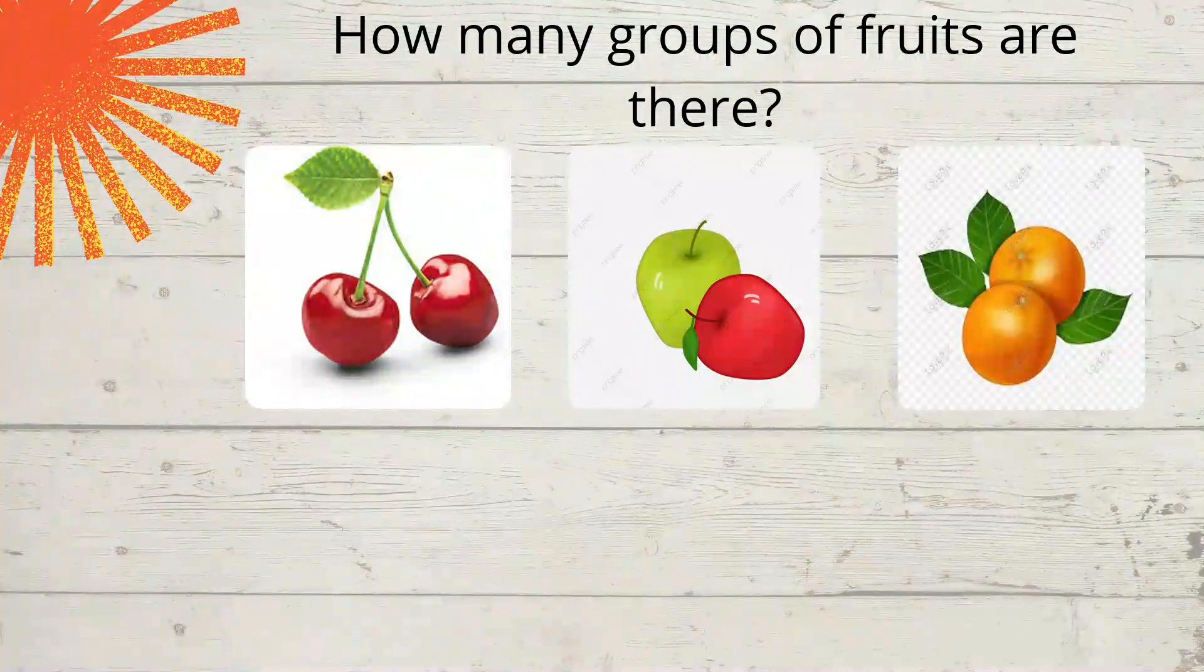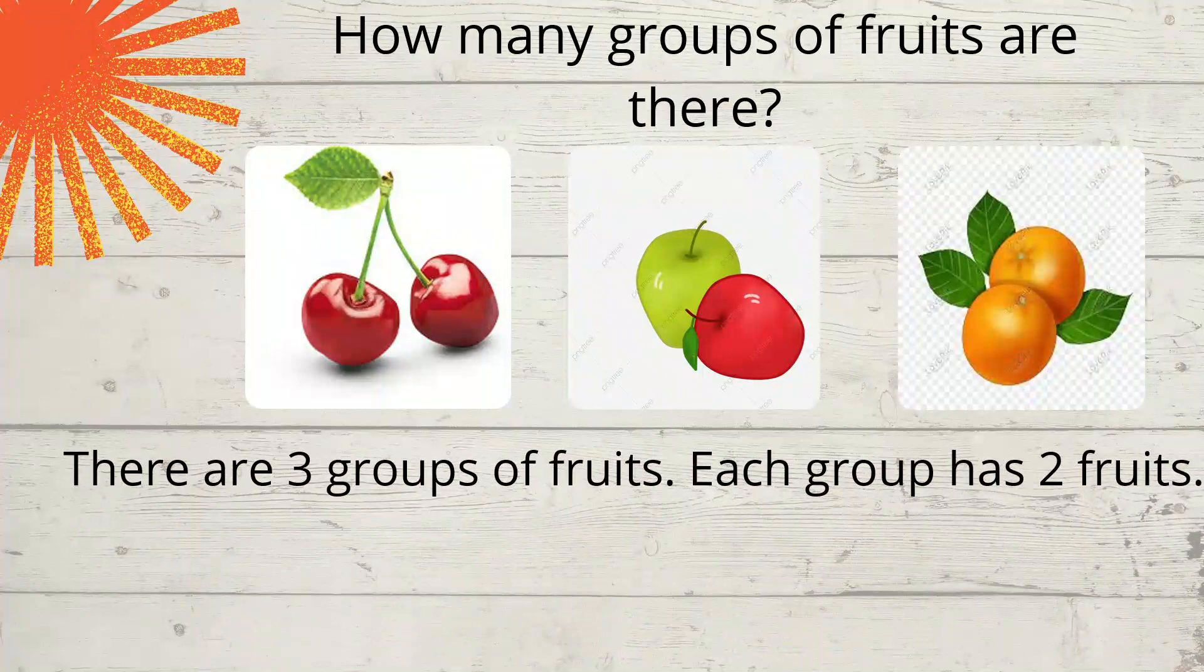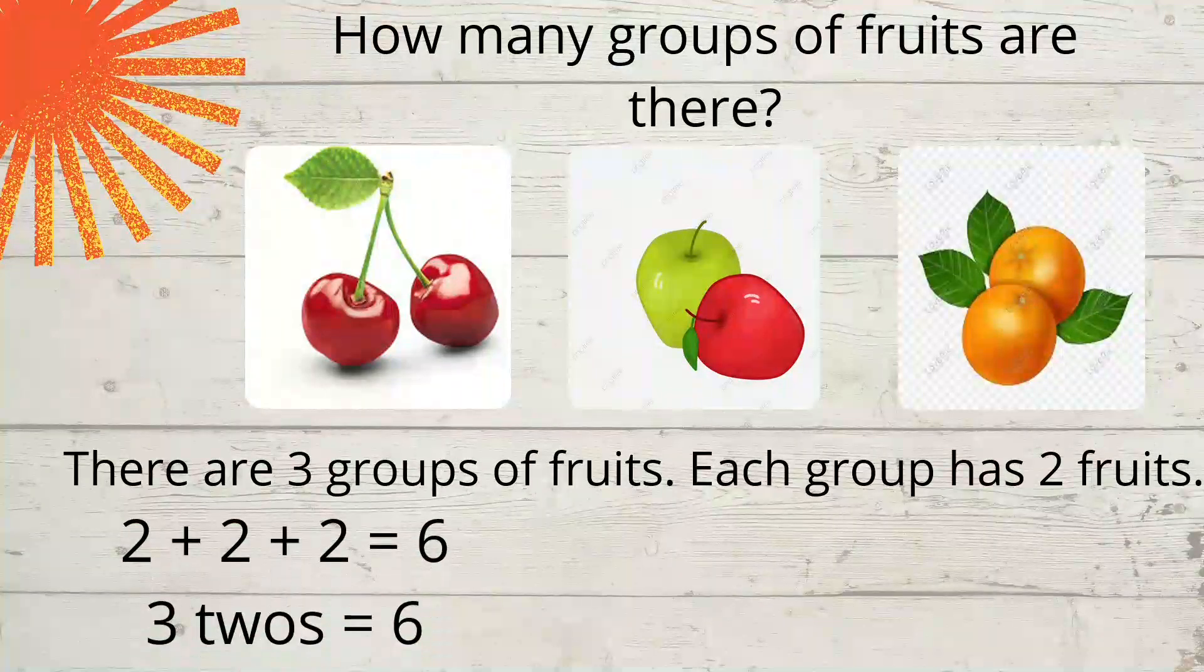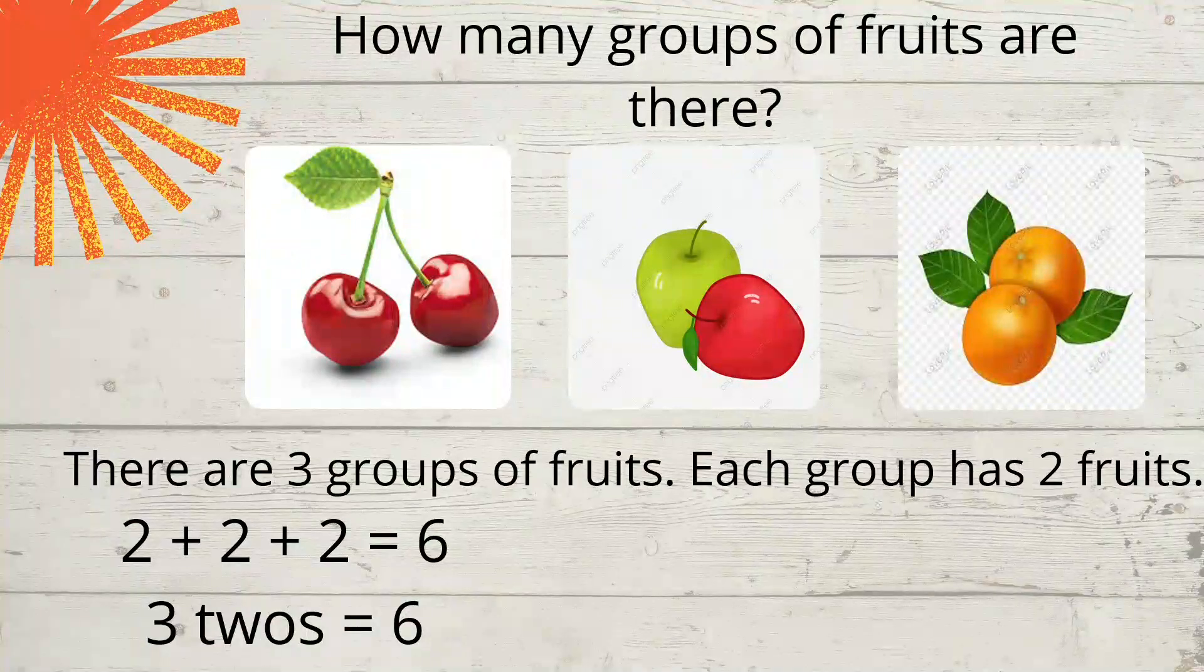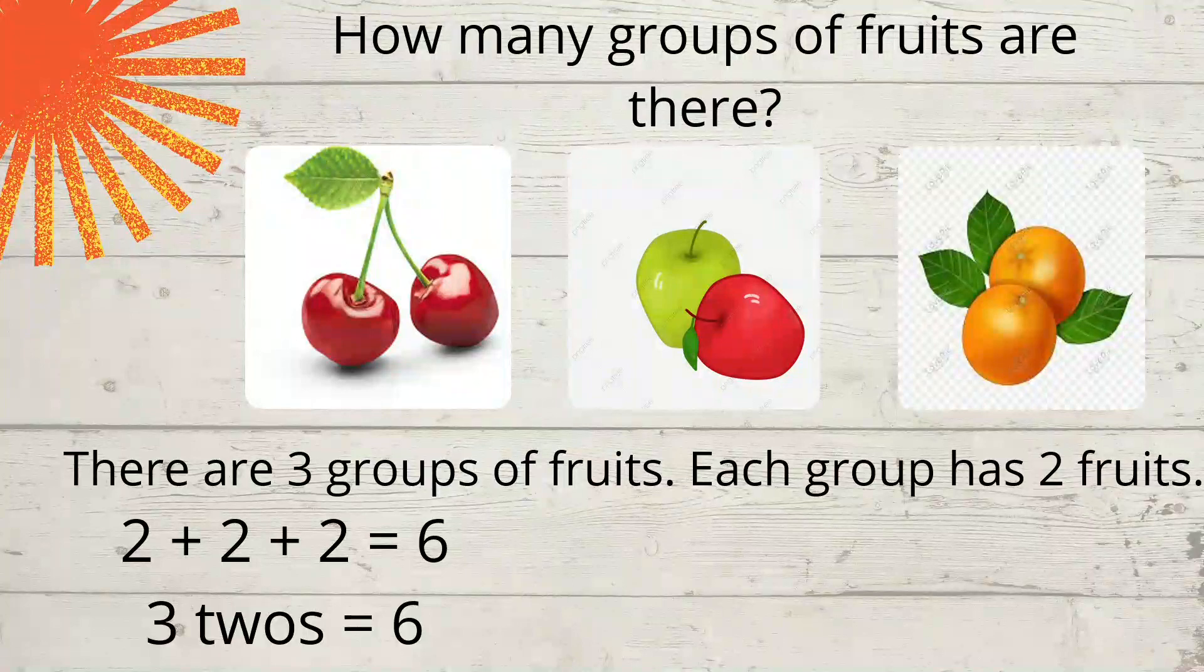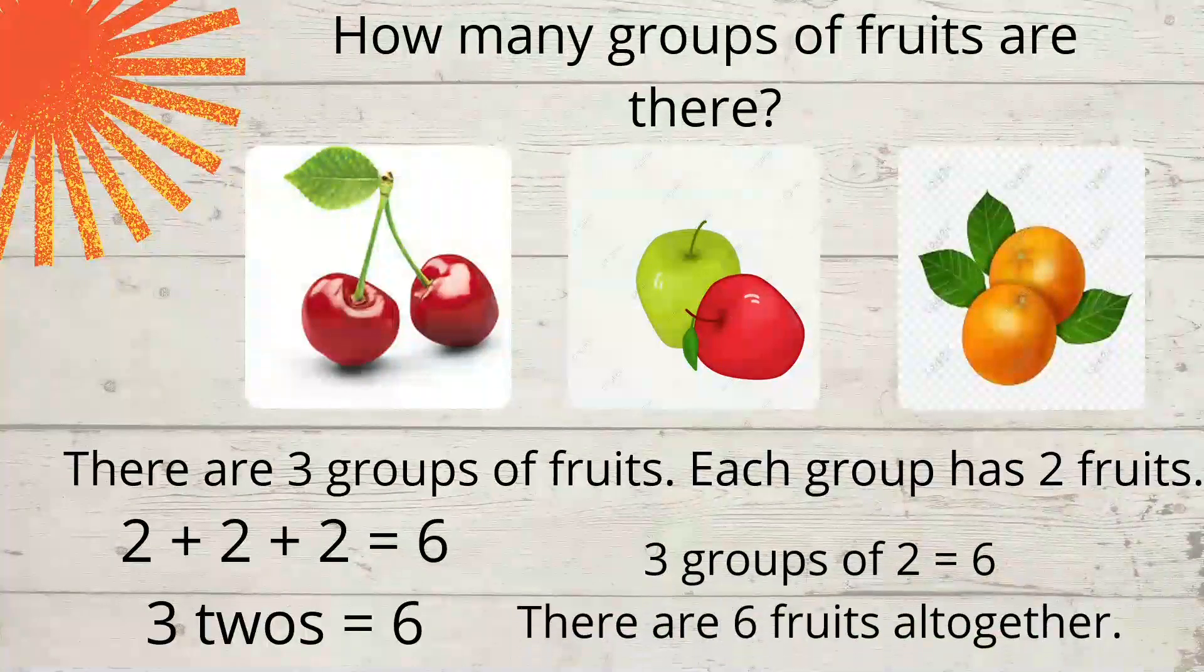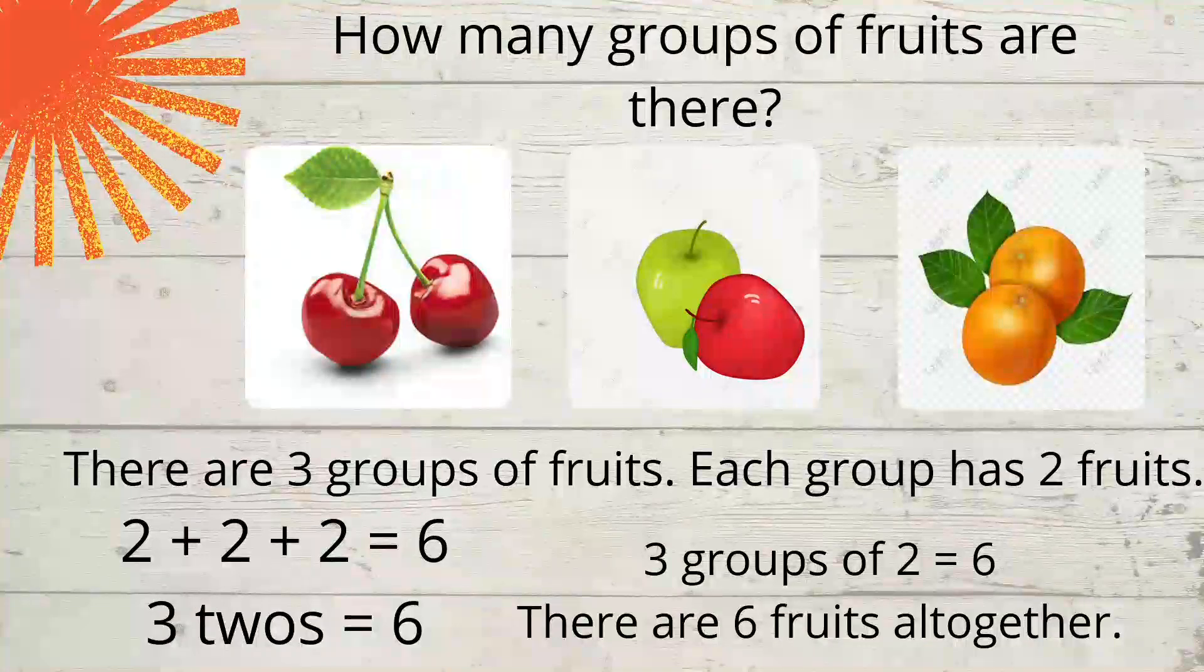How many groups of fruits are there? There are 3 groups of fruits and each group has 2 fruits. So we can say that 2 plus 2 plus 2 equals 6. And when you say 3 twos, write 3 groups of 2. That is equal to 6. So 3 groups of 2 is equal to 6. So there are 6 fruits all together.